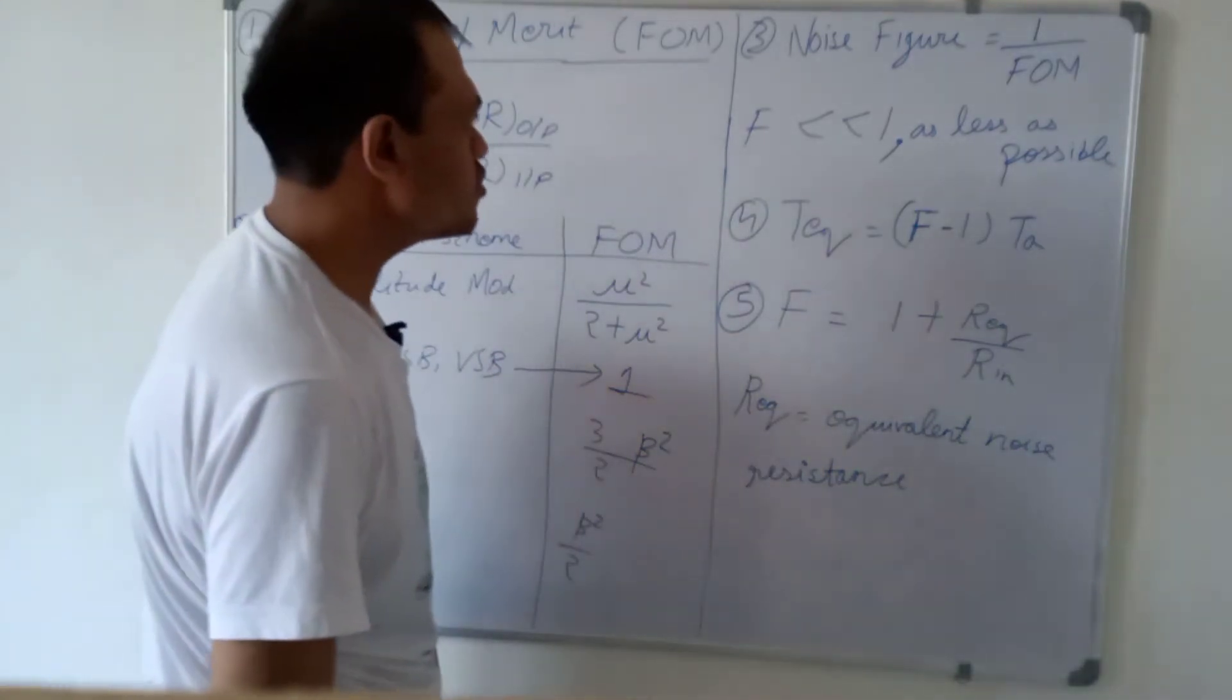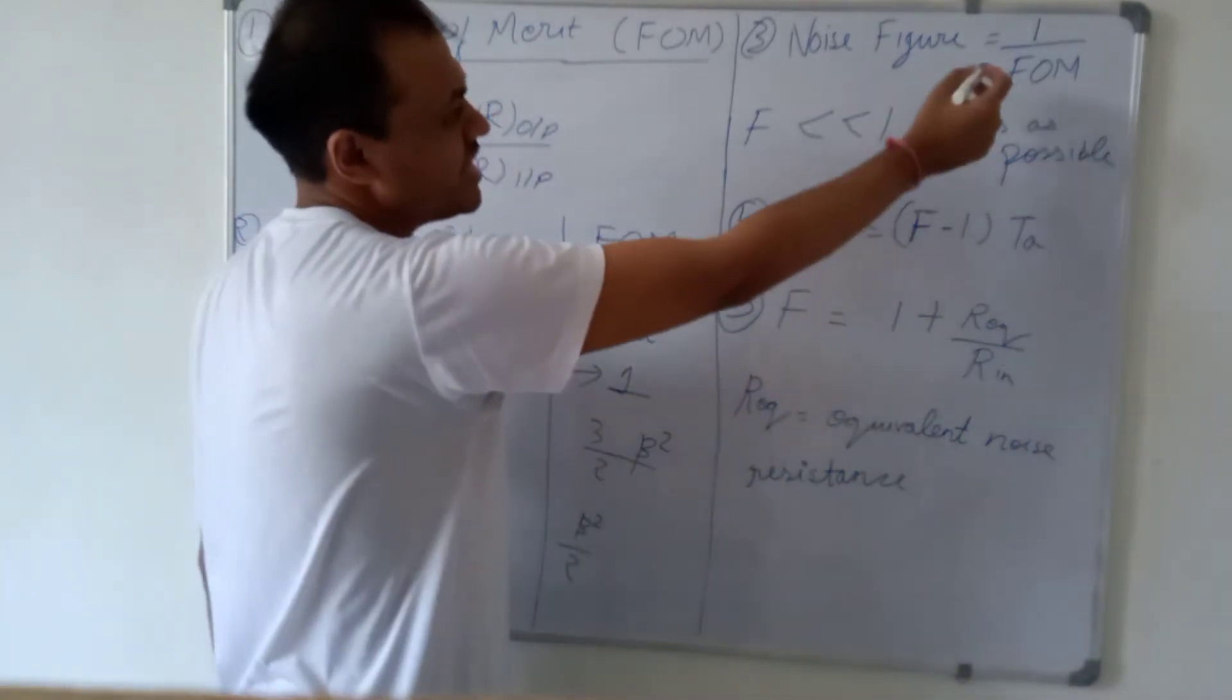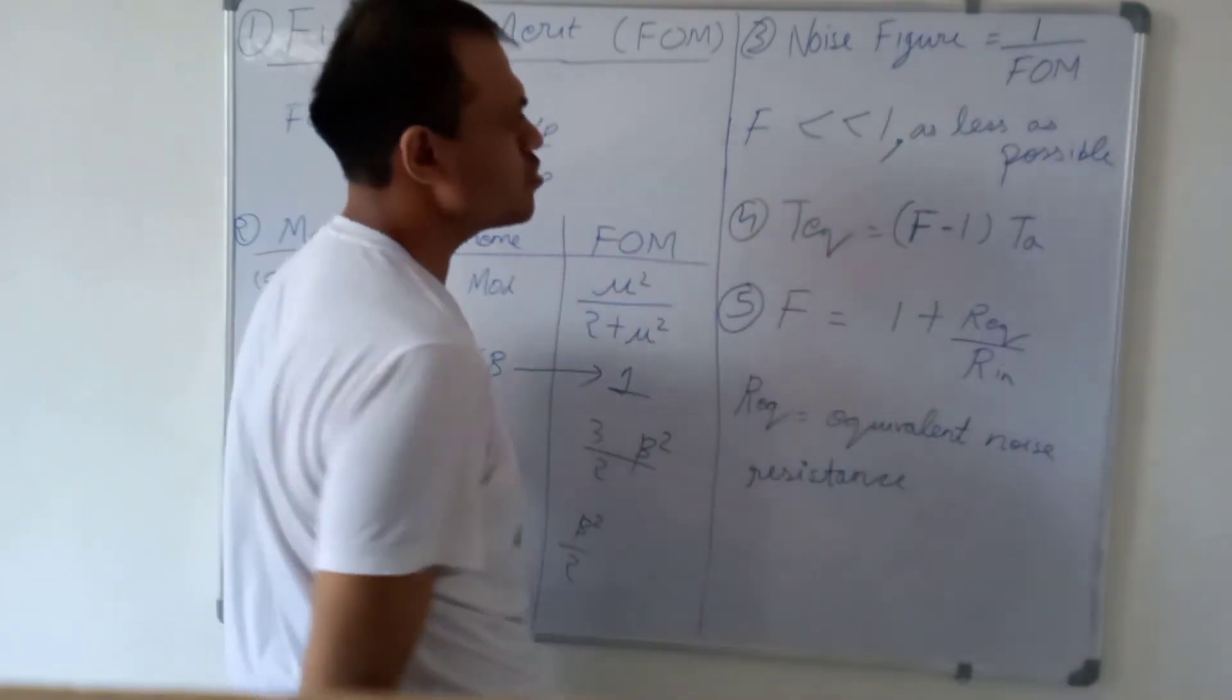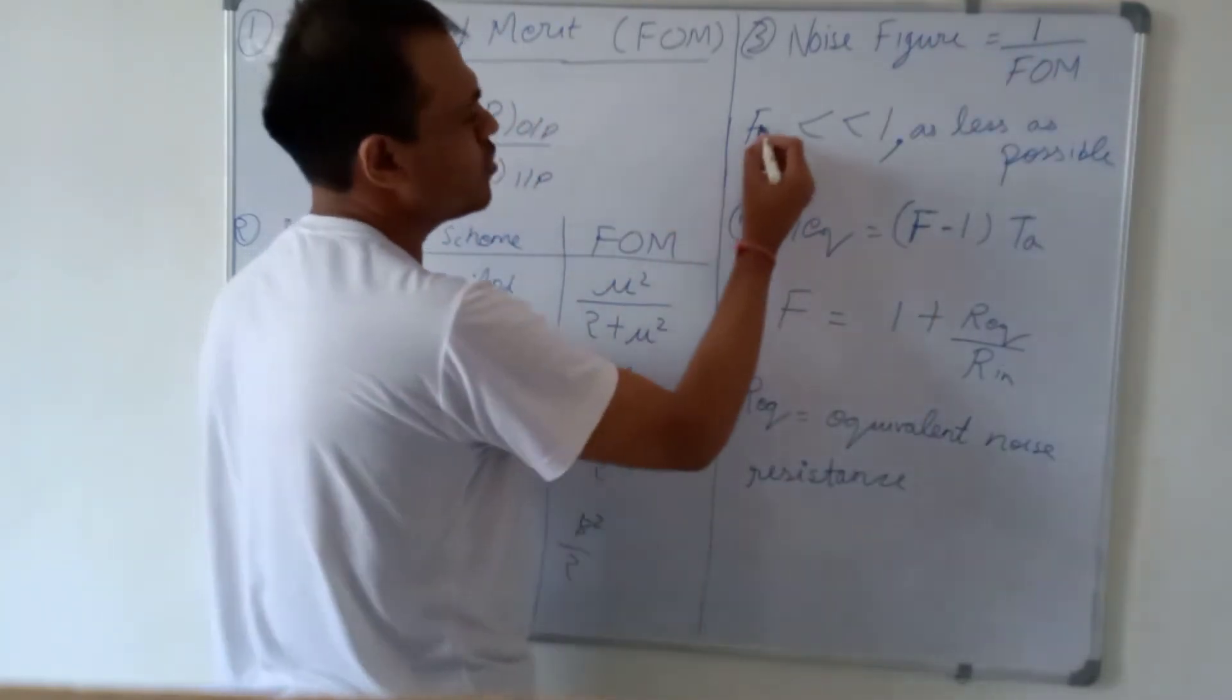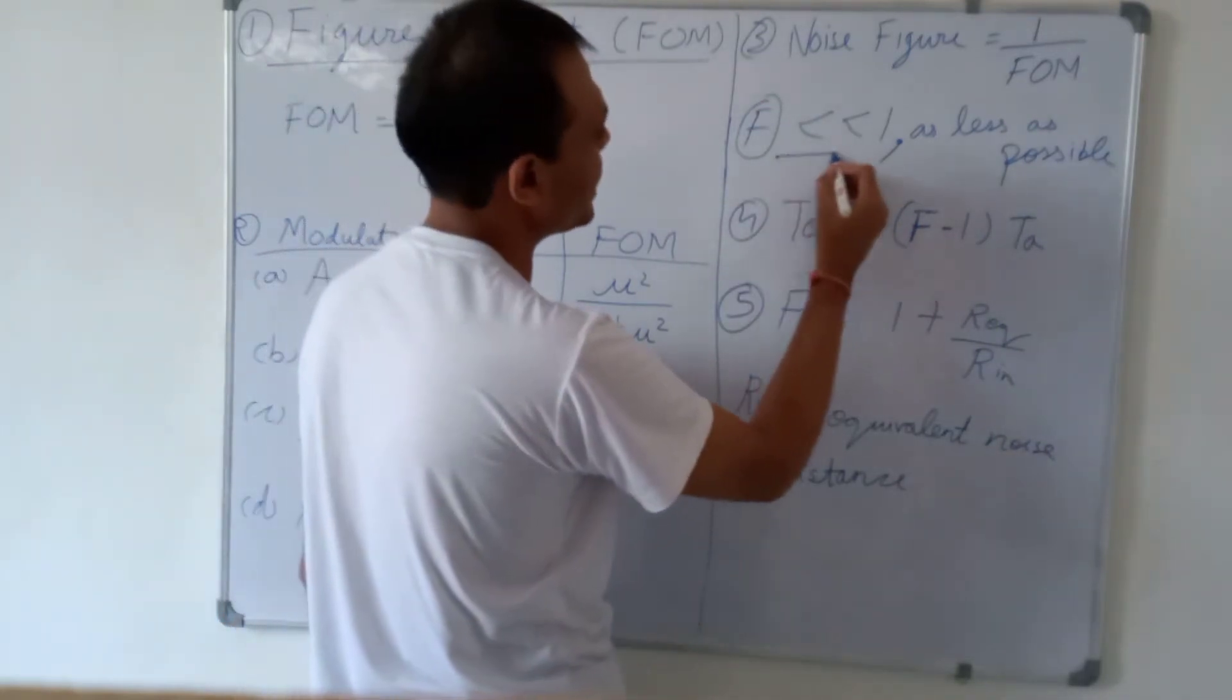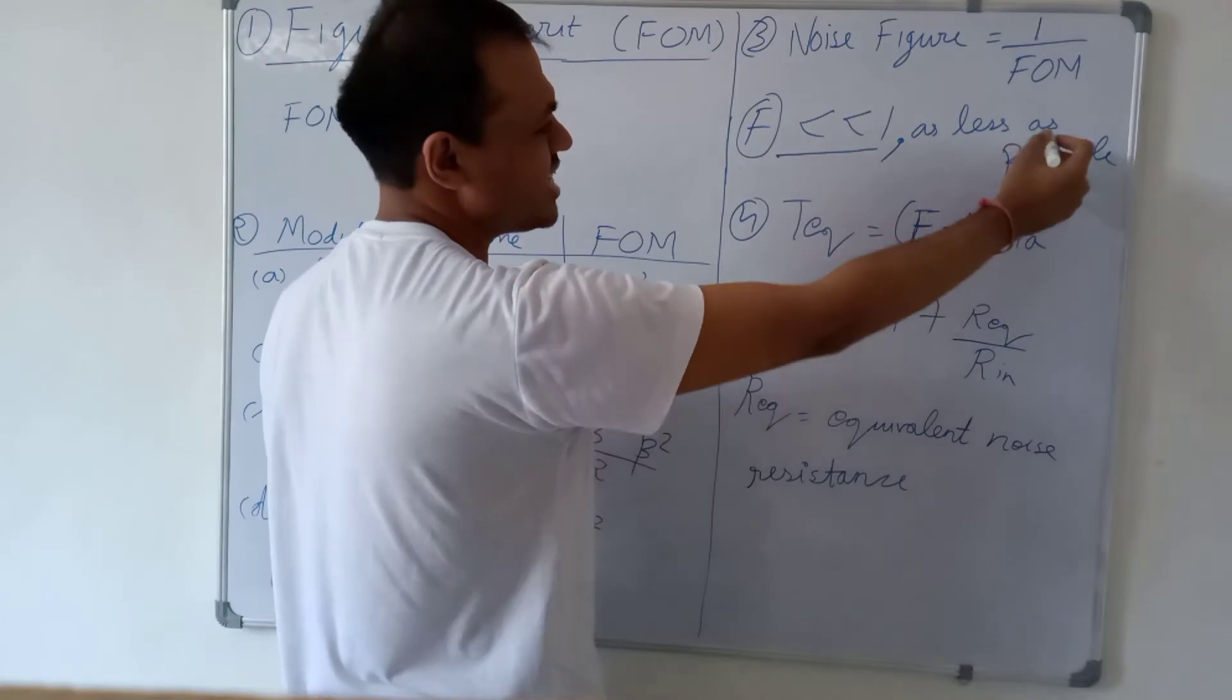Now we come to the noise figure. Noise figure is reciprocal of figure of merit. So 1 upon figure of merit equals noise figure, and noise figure is denoted by F. Ideally, we want noise figure to be very, very less than 1 and as less as possible.